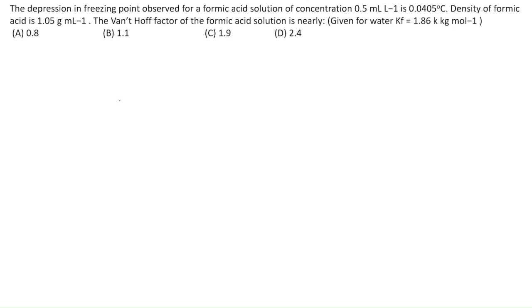In the question, the depression in freezing point observed for a formic acid solution of concentration 0.5 mL/L is 0.0405°C. Density of formic acid is given. You have to find out the Van't Hoff factor of the formic acid in solution.